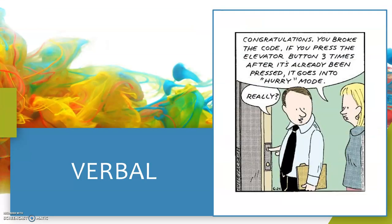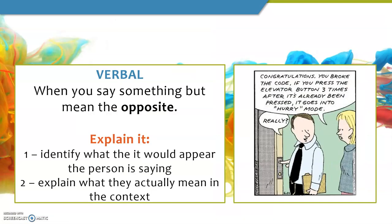Now we move on to verbal irony. We've got a gentleman pressing an elevator button and the woman behind him says 'congratulations, you broke the code — if you press the elevator button three times after it's already been pressed it goes into hurry mode.' If situational irony is when the opposite of what you expect happens, verbal irony is when you say something but mean the opposite of what you say. To explain verbal irony, identify what it would appear the person is saying, then explain what they actually mean.